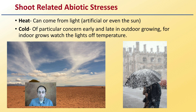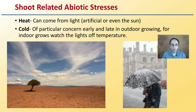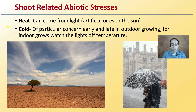Looking at shoot-related abiotic stresses occurring on the top of the plant: heat can come from artificial light or even the sun and cause heat stress. There's also cold, which is a particular concern late in outdoor growing. For indoor growers, watch the lights-off temperature and monitor it carefully. There is another video on Nabaco University looking at the relationship of frost, which is cold damage on outdoor-grown cannabis.